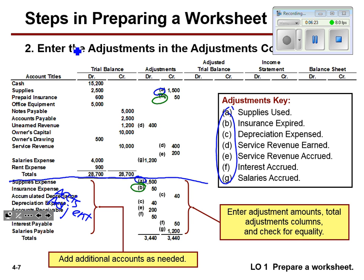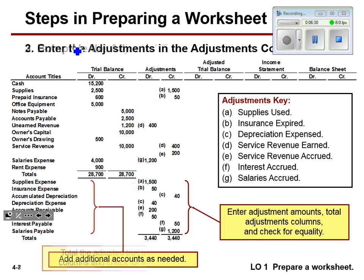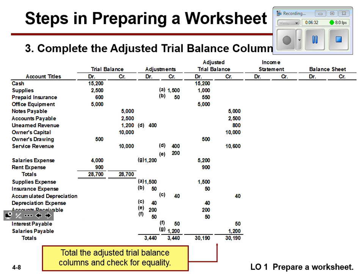We start with our trial balance, roll into our adjustment, and then flip to the next page to update our trial balance — what's called the adjusted trial balance. Is it starting to look like a matrix of numbers? Yes. And if you put a number in the wrong spot, the rest of it will be off. I want to focus on supplies for a minute. Supplies, of course, is an asset.